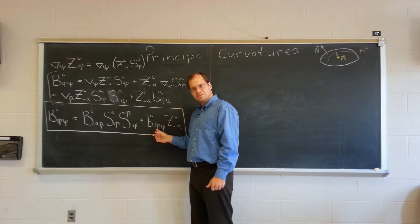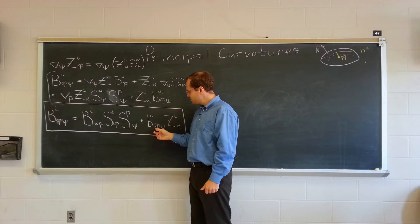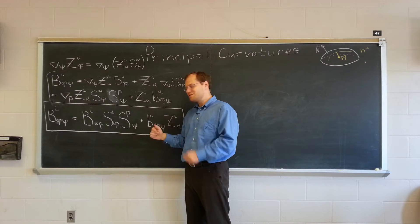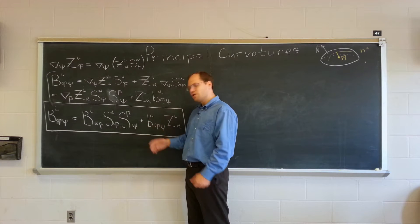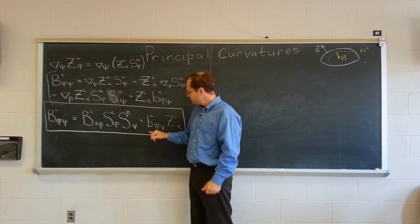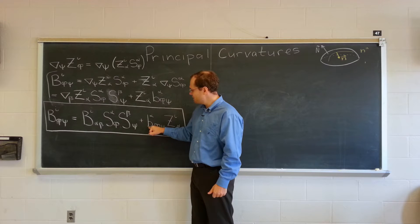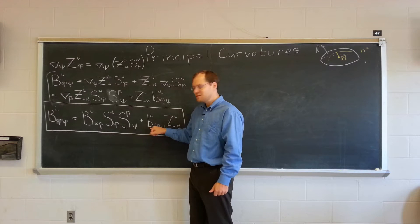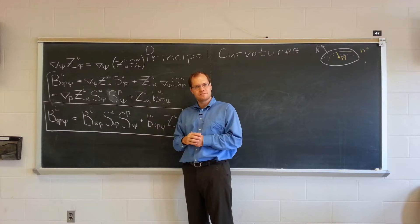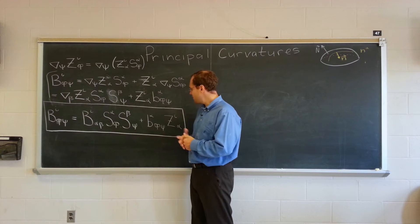Because what this object is, being the curvature normal tensor, as we're calling it, of the curve as embedded in the surface. But now that we're considering the special case of the hypersurface, this will be N alpha times the proper curvature tensor, B phi psi.